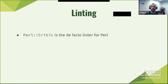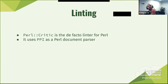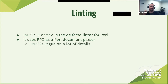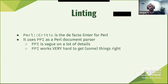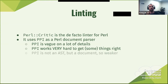Perl::Critic is the de facto linter, and it uses PPI to parse Perl files as documents. It doesn't actually understand a tree structure — it understands a document that says 'I have a whitespace character here, I have a string here, and I think it's going to be a word.' The thing is, PPI itself is very vague, and that's difficult. It works really, really hard to get to where it is. PPI is not an AST — it's not a tree, it's just a document.